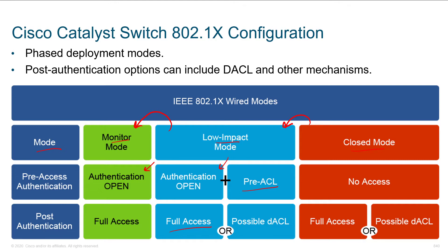Low impact mode is a step towards that finish line where we do have the objective of authentication so that we can reach full access, but if authentication doesn't succeed, it's not a big deal. And then finally, once it's up and running and fully implemented, no one would have access until they actually authenticate.